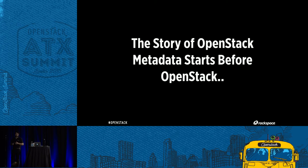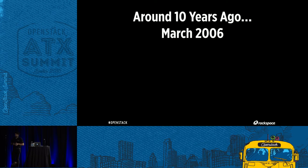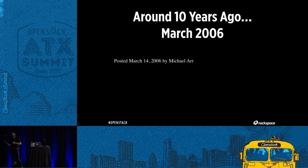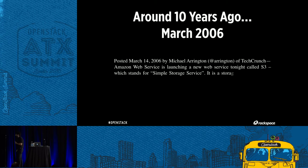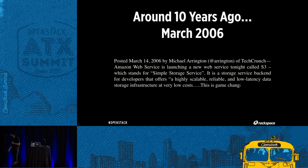The story of OpenStack metadata actually starts way before OpenStack — ten years ago, 2006. This is an actual press release from March 2006. Michael Arrington of TechCrunch says Amazon Web Services is launching a new web service called S3, which stands for Simple Storage Service — a storage back-end for developers offering highly scalable, reliable, low-latency data storage at very low cost. Game-changing.